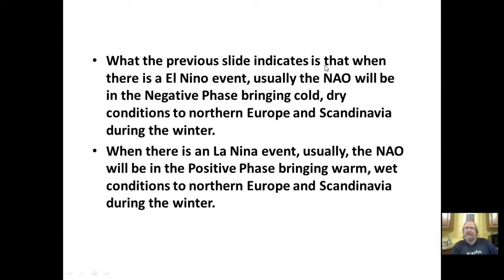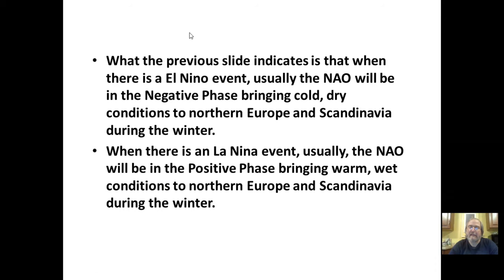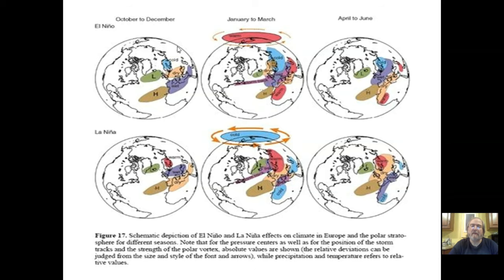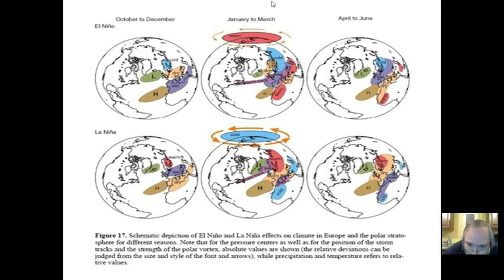When there is an El Niño event, the NAO typically will be in the negative phase, bringing cold, dry conditions to northern Europe and Scandinavia during the winter. When there is a La Niña event, the NAO will be in the positive phase, bringing warm, wet conditions to northern Europe and Scandinavia during the winter. So El Niño is associated with the negative NAO phase, and La Niña with the positive NAO phase.